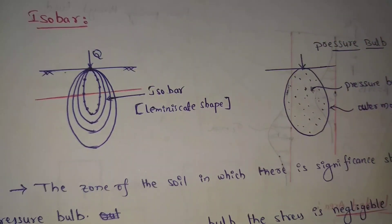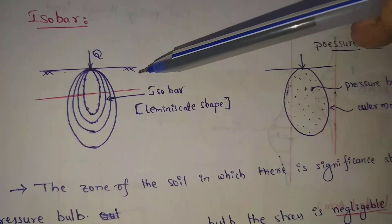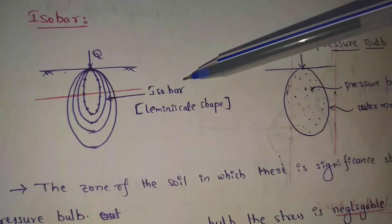So curve or contour, this curve we provide some shape, so different different isobars.